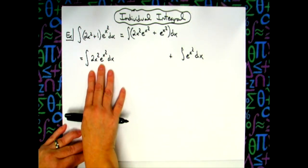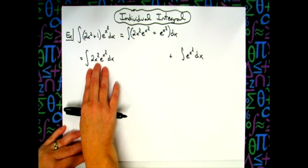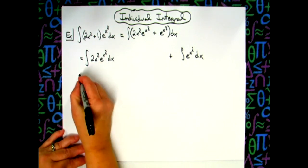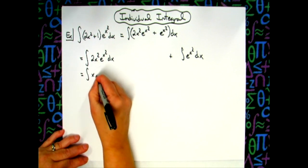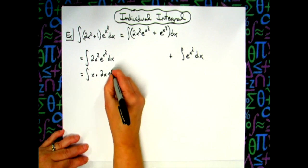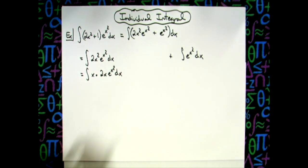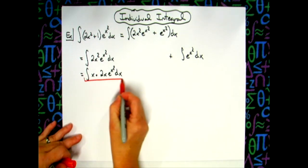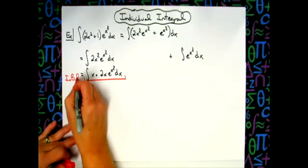Now on this right here, obviously we're going to need to use integration by parts. I am going to choose to rewrite this to make that integration by parts easier. So I'm going to look at this as x times 2xe^(x²) dx. That is simply so I can do my integration by parts and it's going to work out a little bit easier.